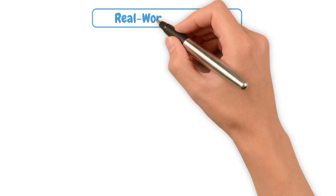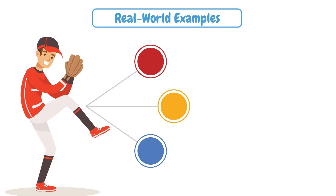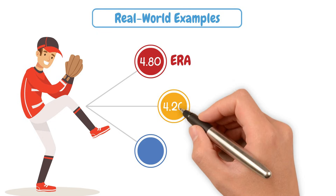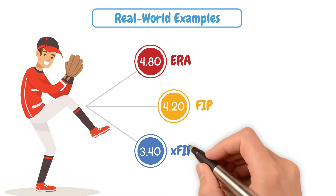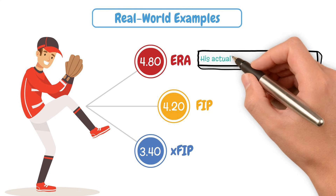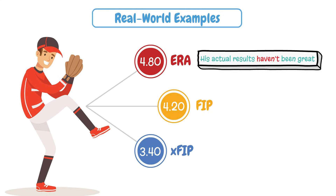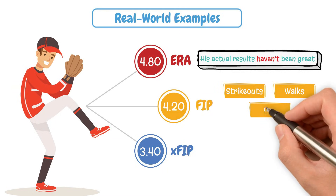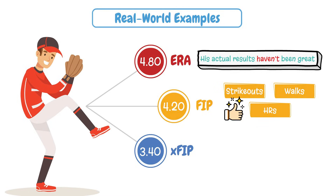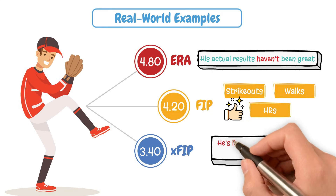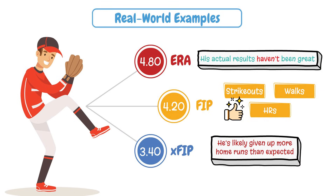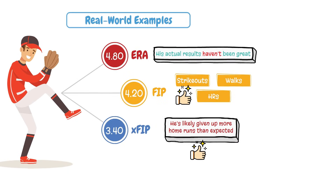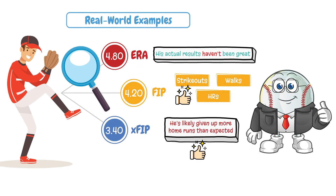Let's go through a quick generic example. Say you're looking at a pitcher with a 4.8 ERA, a 4.2 FIP, and a 3.4 XFIP. That tells you a few things: his actual results haven't been great — that's the ERA. His strikeouts, walks, and home runs have been better than you'd expect for those overall results — that's FIP. And he's likely given up more home runs than expected, meaning better results may be coming in the future — that's XFIP. Front offices look for this exact kind of profile: undervalued arms performing better than the box score suggests.